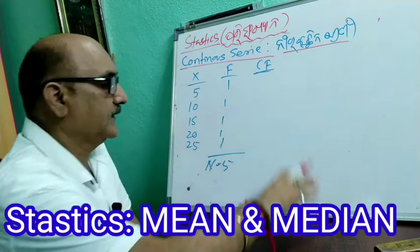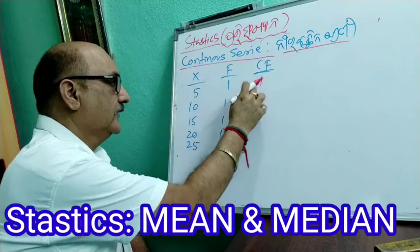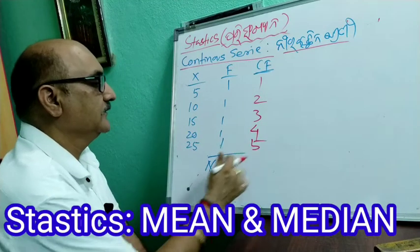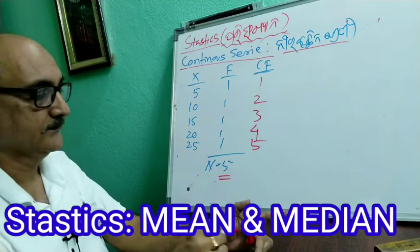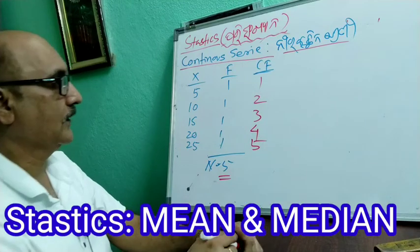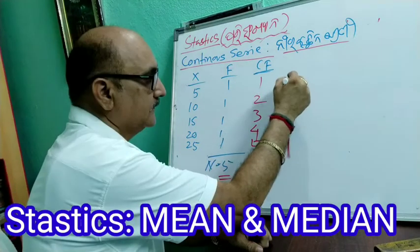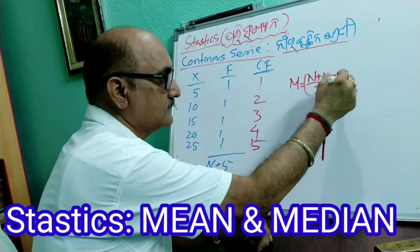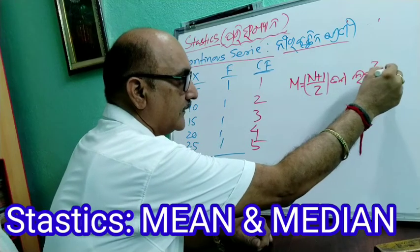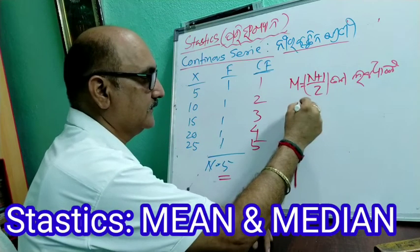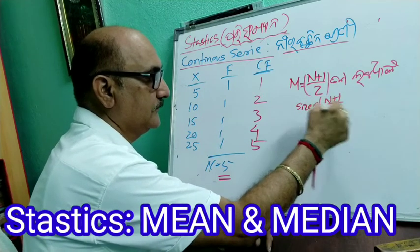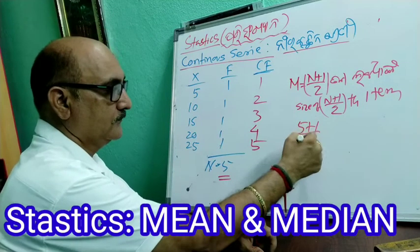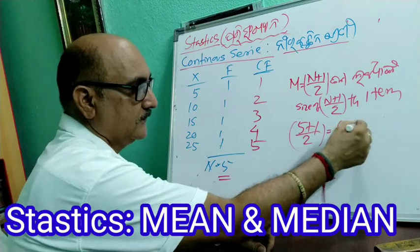How do we study about the first CF? The size of M is equal to N plus 1 by 2. You can write the size of N plus 1 by 2 to the item, and it is equal to 3.